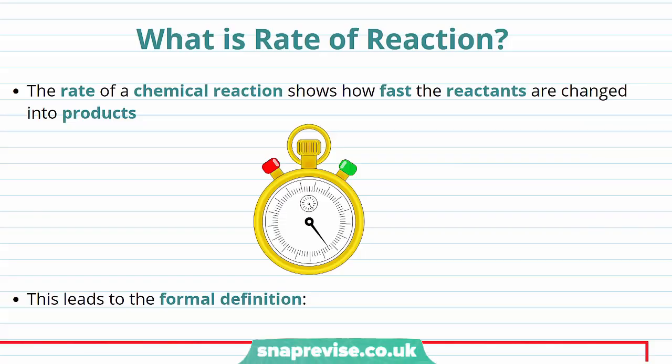So let's start with the definition, which is that the rate of a chemical reaction just tells you how fast the reactants are changed into the products.